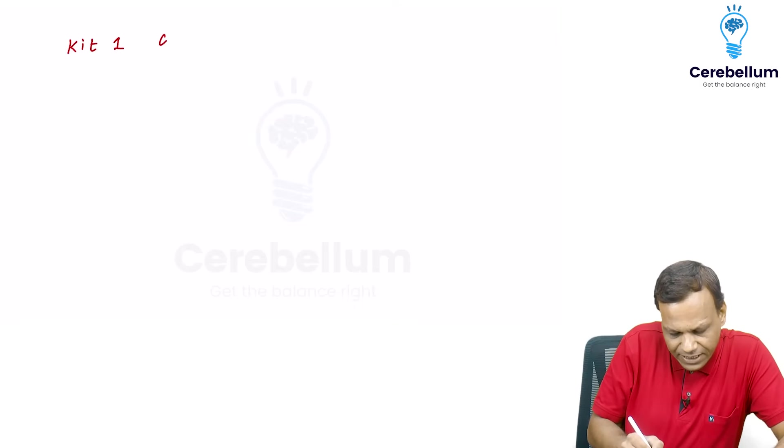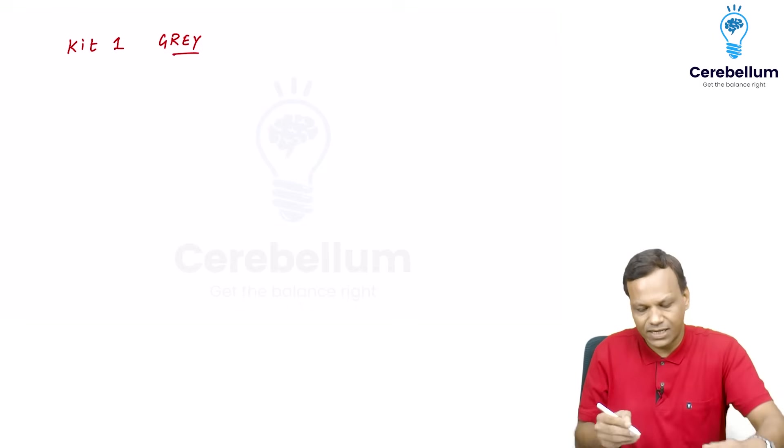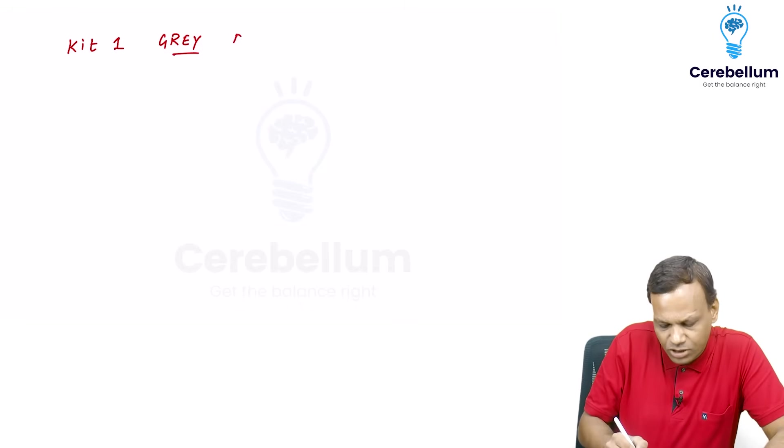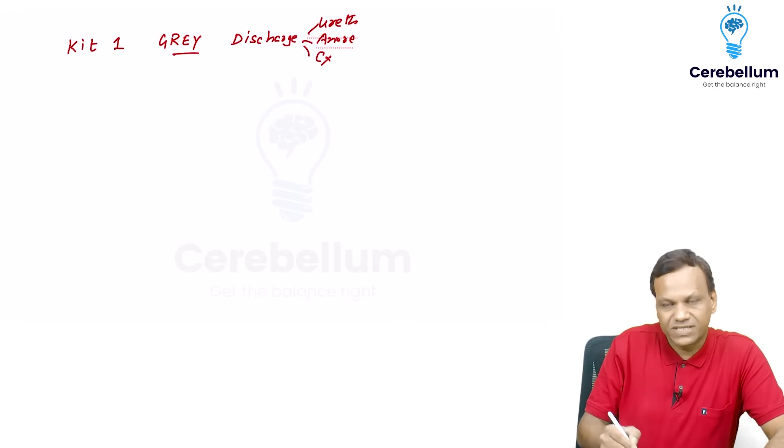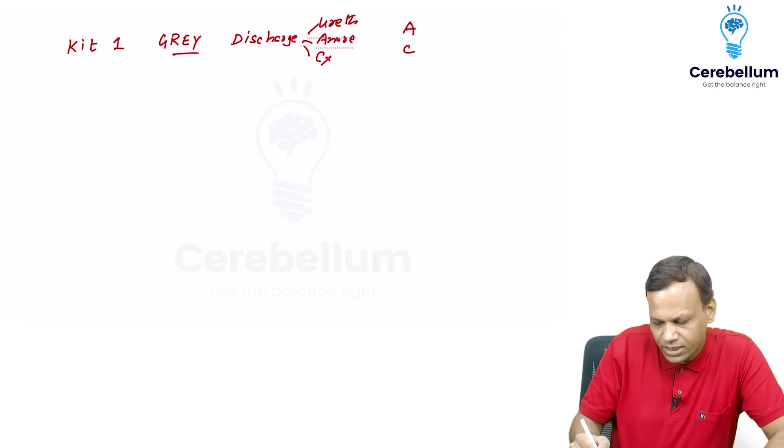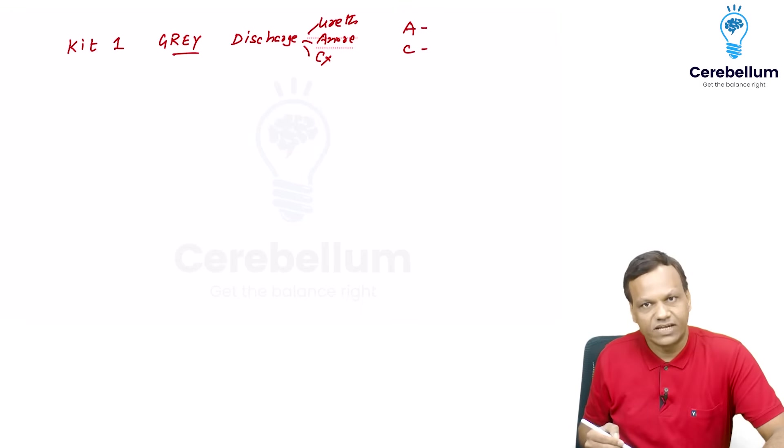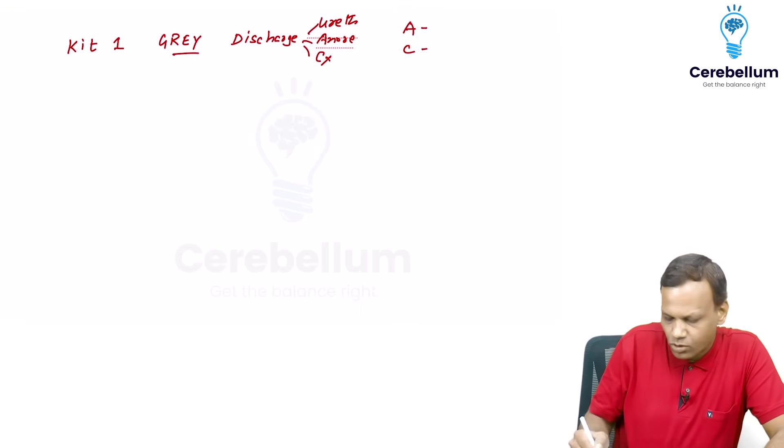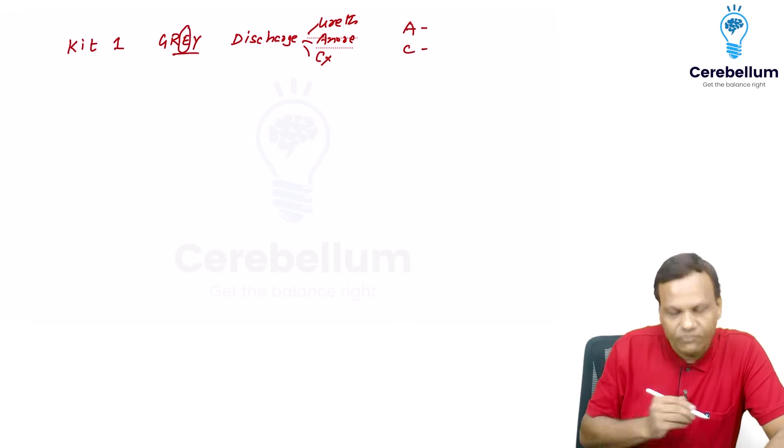Kit 1 is gray in color. Gray, sun's ray. Ray will cause sweating, so it is for discharge. Any type of discharge. It may be urethral discharge, anorectal discharge, or cervical discharge. It is for discharge. And sweating will dry in AC. So it contains azithromycin and cefixime. You can remember that. So one E, so kit 1.